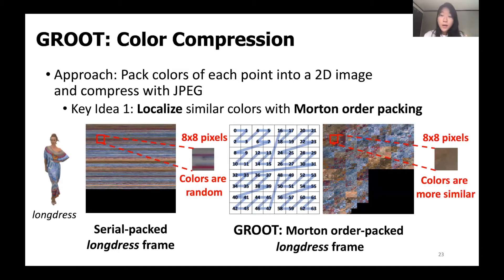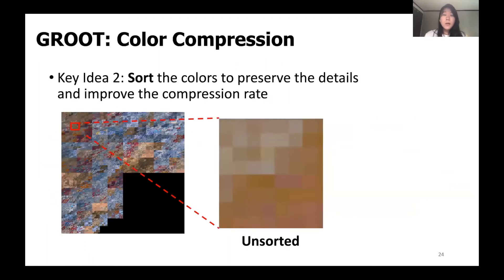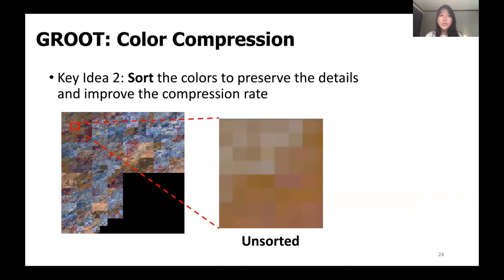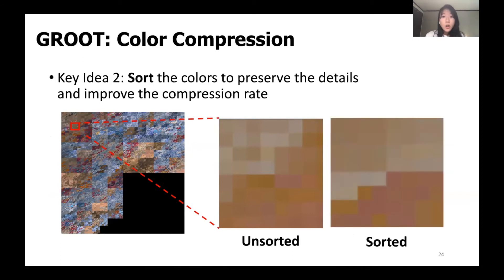As you can see on the right, the colors within the same block are much more similar with Morton ordering. But even after localizing similar colors, when we look closer at how pixels are ordered, adjacent points still had some color difference. Since the PDTree architecture allows points to be reordered without changing the encoding and decoding process, we could sort the colors once more to preserve these details and maintain perceptual quality.